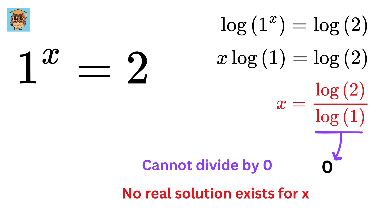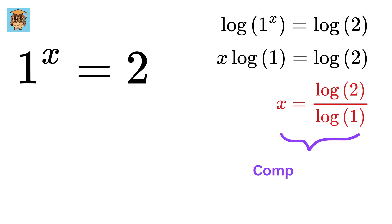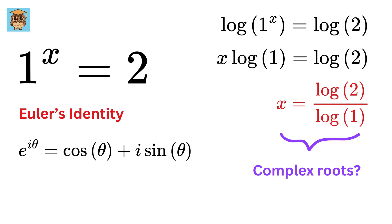But I told you this is a tricky question. So now, how can we find the complex roots for this equation? We will first start with Euler's identity, which is e raised to i theta is equal to cosine theta plus i sine theta.